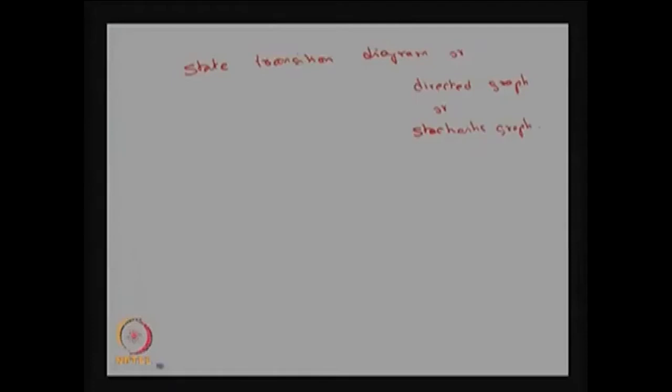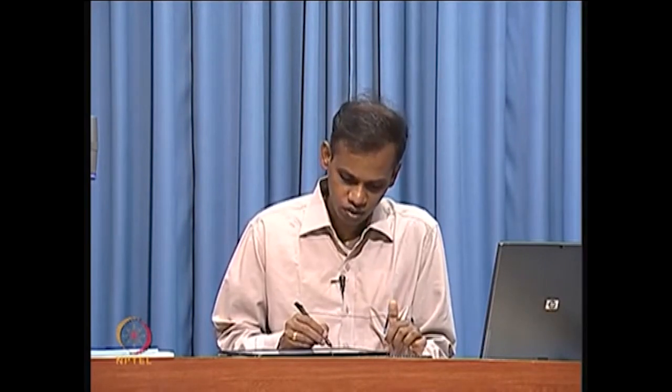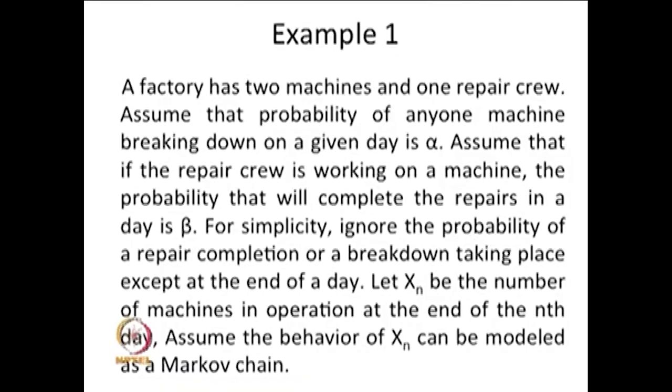I am going to explain the discrete time Markov chain with three simple examples. The first example is as follows: a factory has two machines and one repair crew.